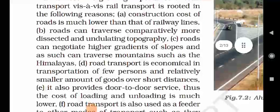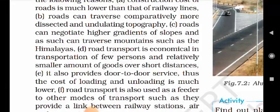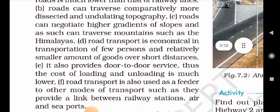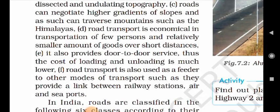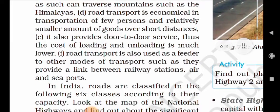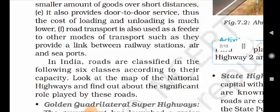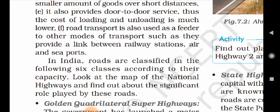A. Construction cost of roads is much lower than that of railway lines. B. Roads can traverse comparatively more dissected and undulating topography. C. Roads can negotiate higher gradients of slopes and as such can traverse mountains such as the Himalayas. D. Road transport is economical in transportation of few persons and relatively smaller amount of goods over short distances. E. It also provides door-to-door service, and thus the cost of loading and unloading is much lower.